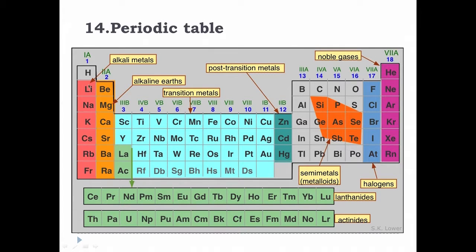Greetings, we meet again to continue our discussion on molecular absorption spectrometry for pollution control monitoring. In the last class we discussed atomic structure and stopped at the periodic table. Depending upon quantum numbers, atomic arrangement of electrons and nucleus, and atomic weight, the periodic table has been constructed. On the left side in red you have lithium, sodium, potassium, rubidium, francium — these are the alkali metals.